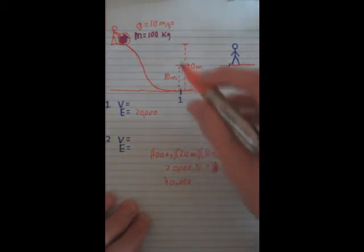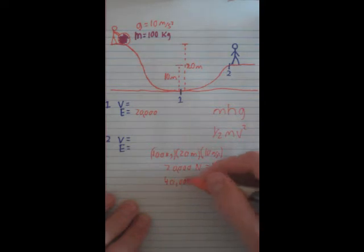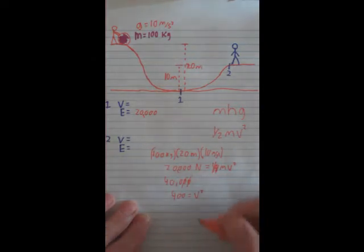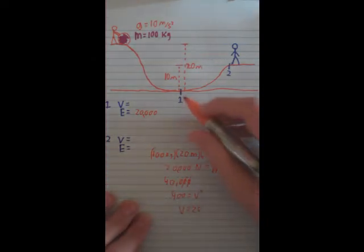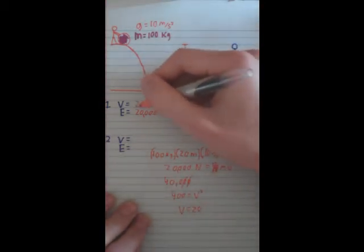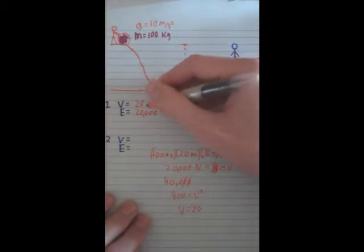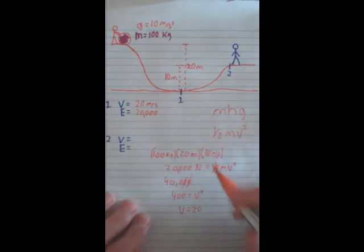Divide it by m which is 100. So we can take out these. So 400 equals v². Square root of that, v is 20. So our speed at the bottom of the hill is 20 meters per second. And that's what we find at the bottom of the hill.